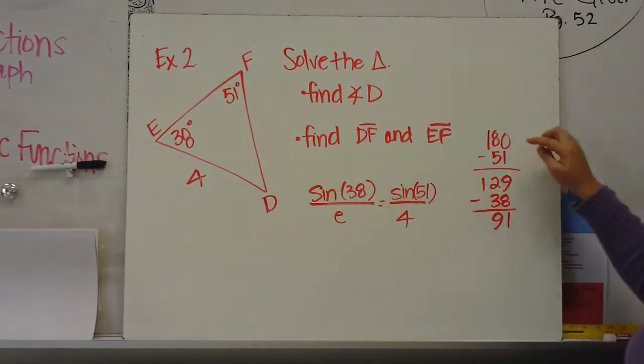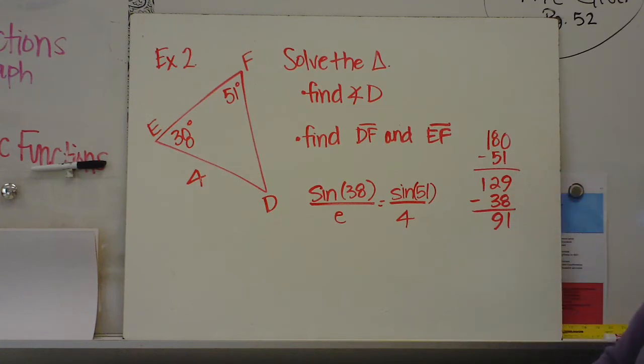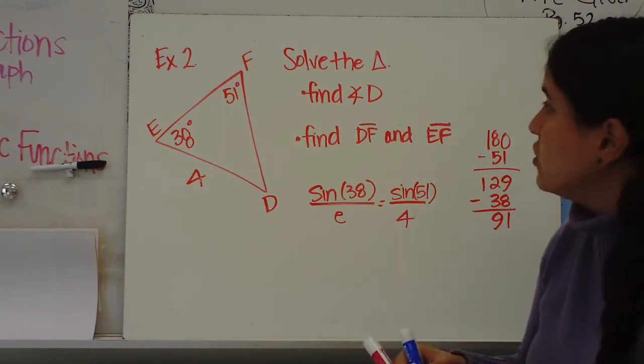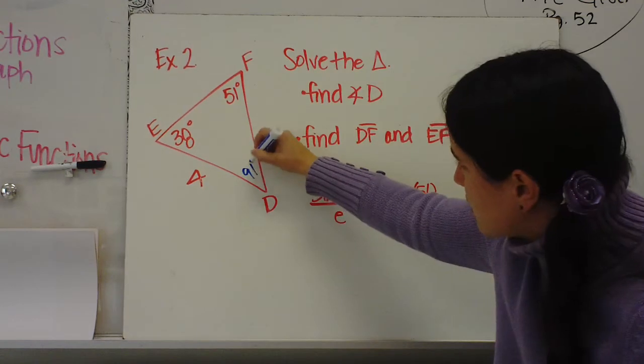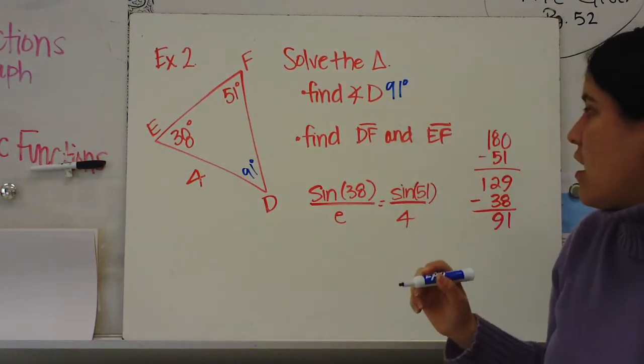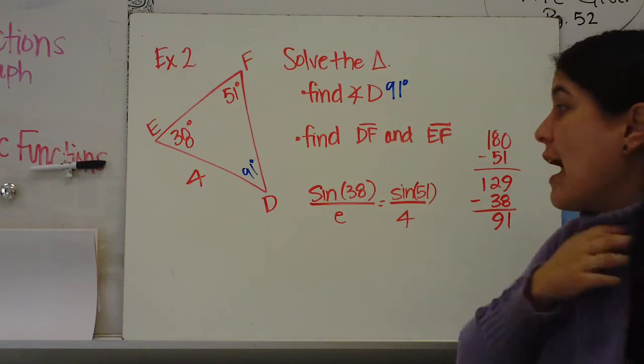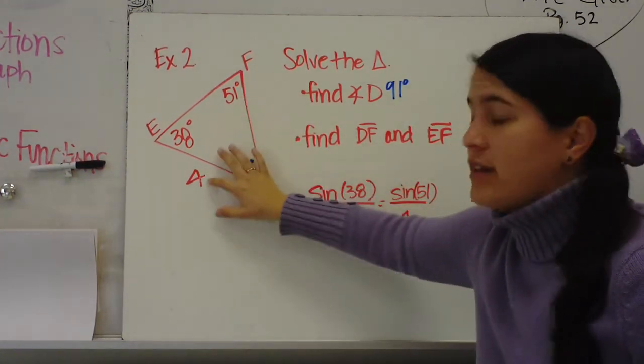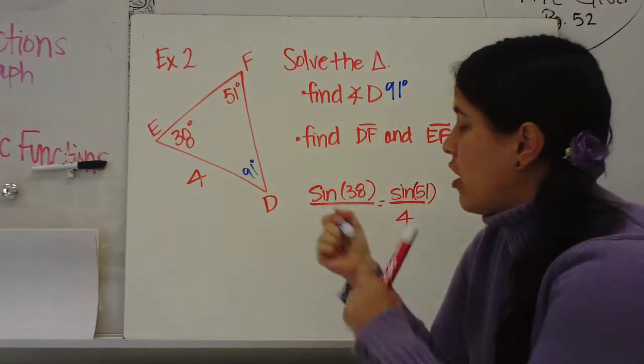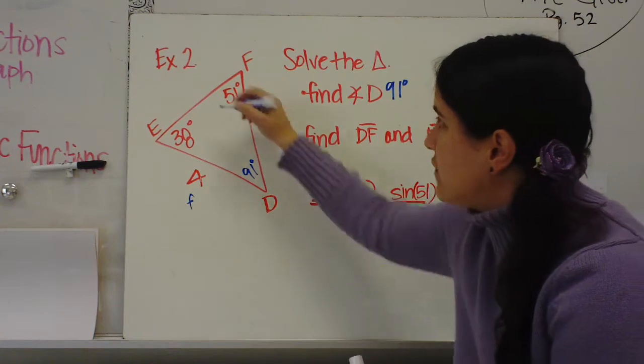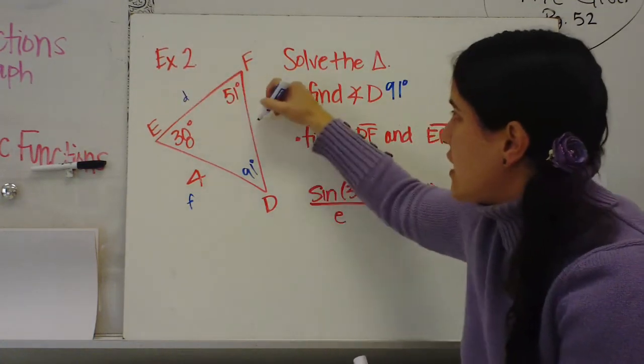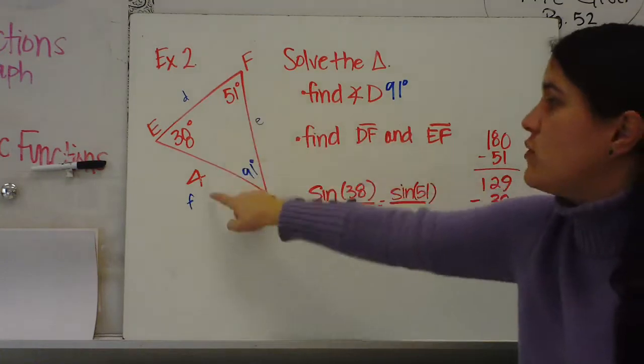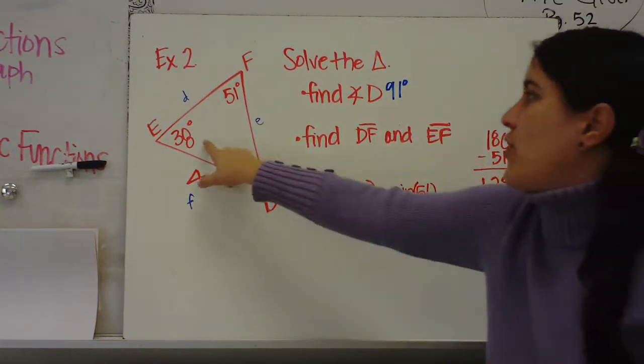So the first thing to do is to find this. Let's just subtract from 180. So I'm showing you 180 minus 51 and then 129 minus 38 is 91. So angle D is 91 degrees. Then I'm going to use what I have to set up my law of sines. I have 51 and 4. That's going to be sine of F and then we'll call this little f. Sine of D and this is little d, sine of E and e. So I've used 51 and 4 and 38 and e.